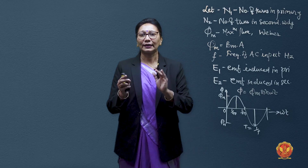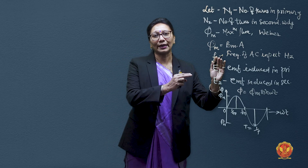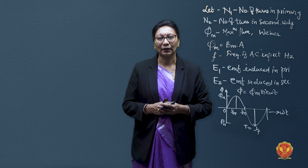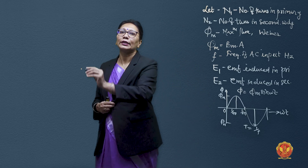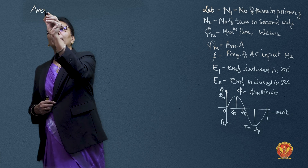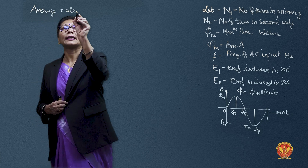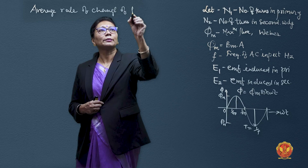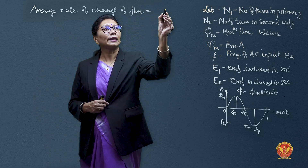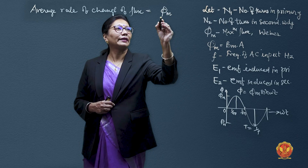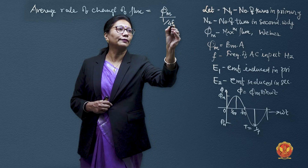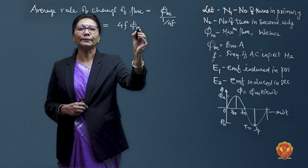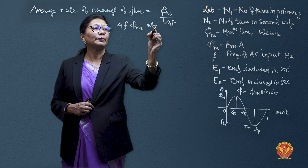This flux is changing from 0 to maximum in one quarter cycle, then again to 0, negative max, and 0 in one complete cycle. So we can say the average rate of change of flux is phi m divided by 1/4f, which can also be written as 4 × f × phi m, in Webers per second or volts.